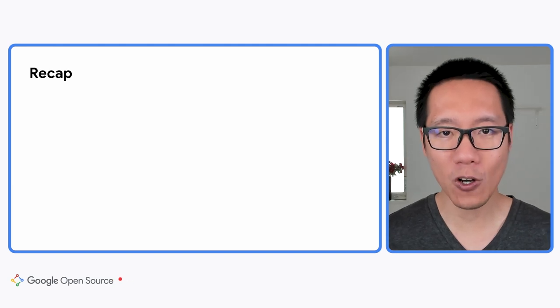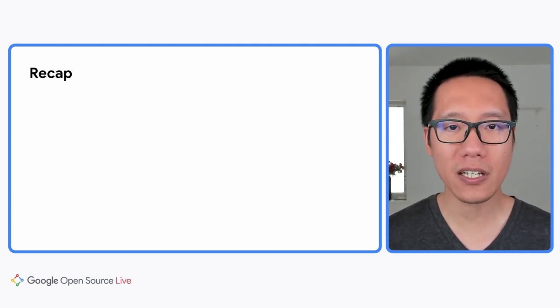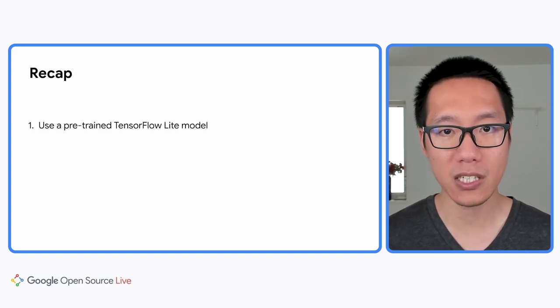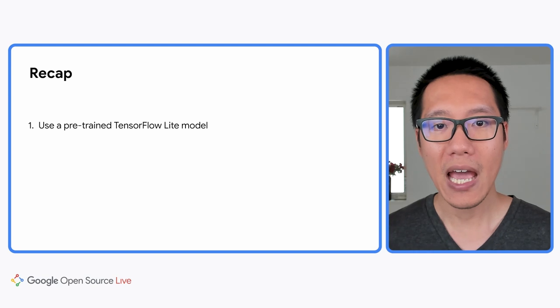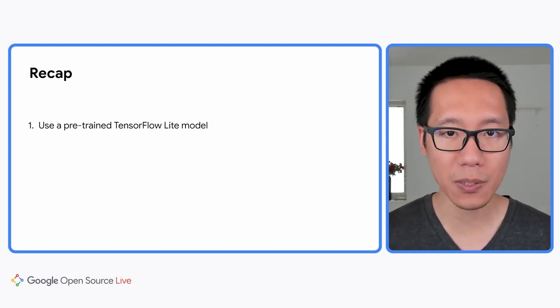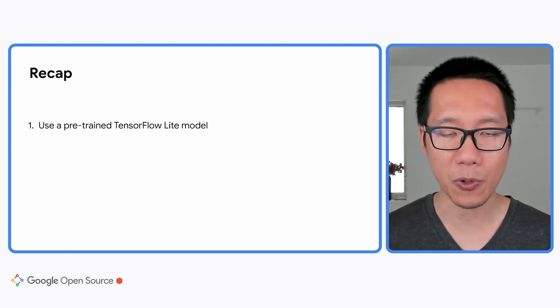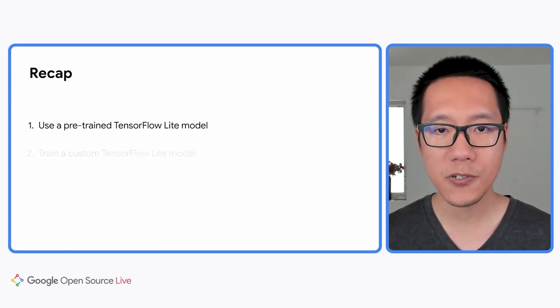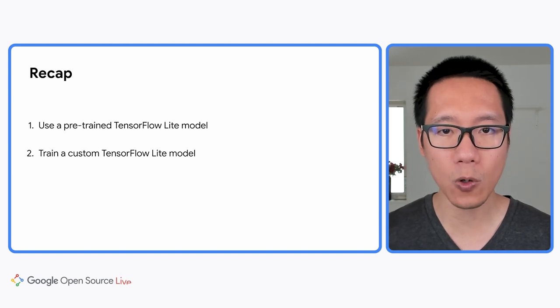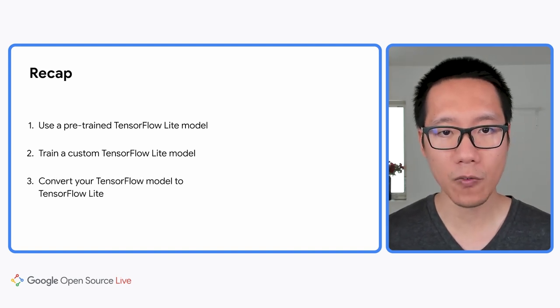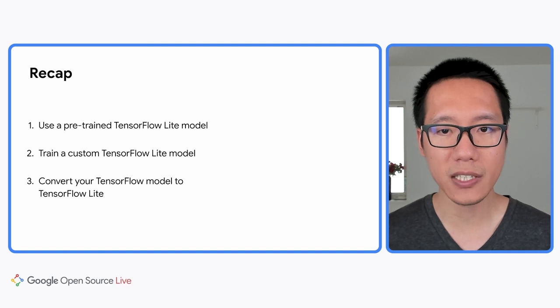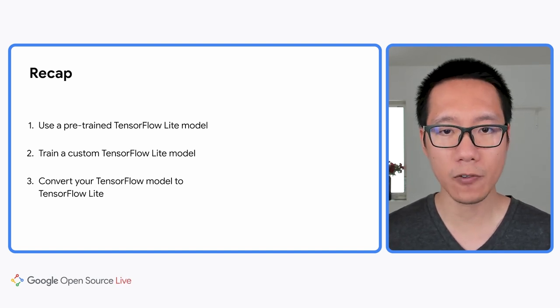So that was all the content for today. Let's recap what we talked about: first, you can get started with on-device machine learning by downloading pre-trained TensorFlow Lite models from TensorFlow Hub and integrating them into your app in just a few lines of code using the TensorFlow Lite Task Library. Then, I showed you how to quickly train a custom TensorFlow Lite model using ModelMaker. And finally, we talked about using the TensorFlow Lite Converter to convert your TensorFlow model to TensorFlow Lite, and how to use the TensorFlow Lite runtime to deploy it on edge devices. Thank you for watching, and please subscribe to the TensorFlow YouTube channel.